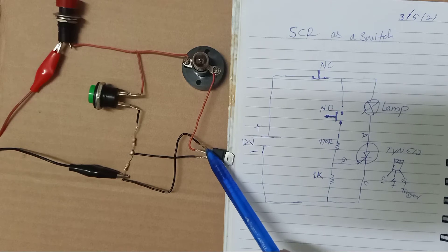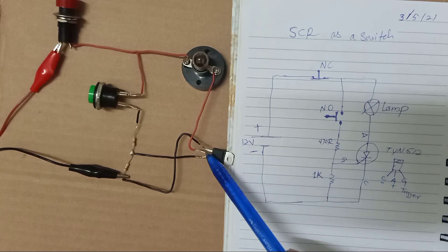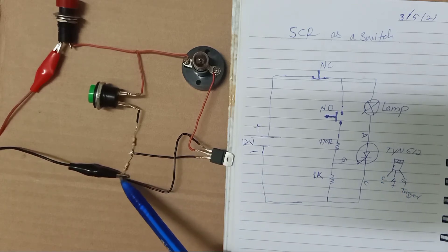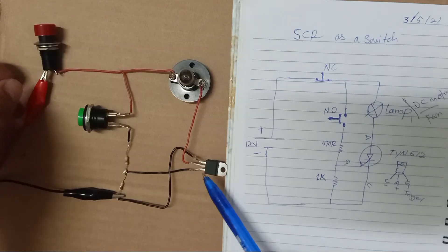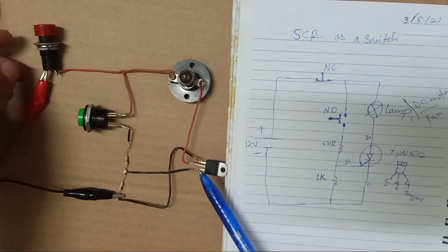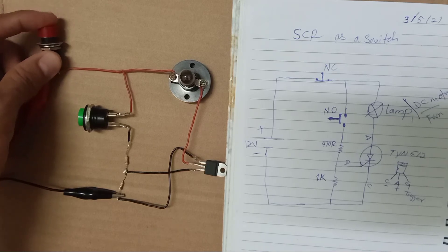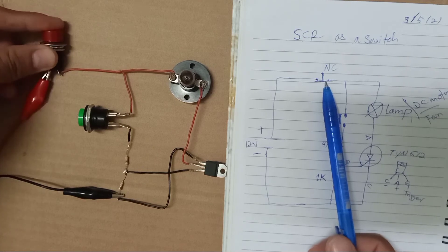The cathode connects to the negative power supply here. Basically, this SCR is normally open — it is already closed if you press the normally closed switch.